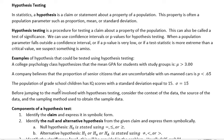The population of grade school children has IQ scores with a standard deviation equal to 15, so we'd say standard deviation equals 15. Notice we can have greater than, less than, or equal to — there are different ways we can state our claims.